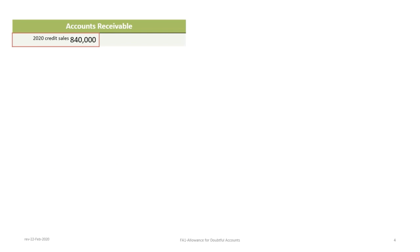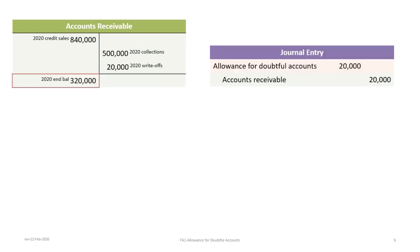We begin with no starting balance since the company started from nothing. In 2020 the company had credit sales of $840,000, so that goes in as a debit to accounts receivable. During the year $500,000 in collections took place, and the company had $20,000 in write-offs, which are credited to accounts receivable. Taking the $840,000 less collections and write-offs gives us an ending accounts receivable balance of $320,000.